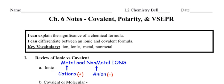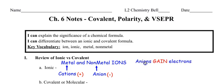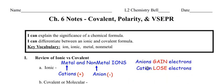Non-metals gain electrons, so they become negative. Why? Because electrons are negatively charged. So anions gain electrons and cations lose electrons. It's really, really important that you have that down.